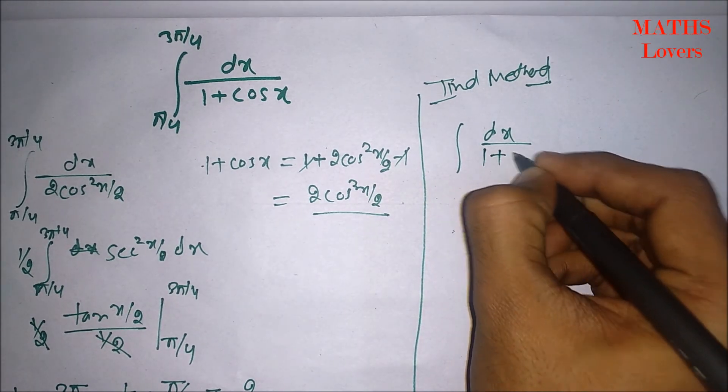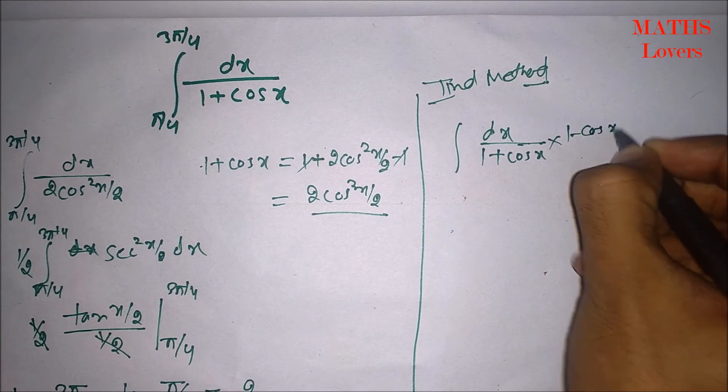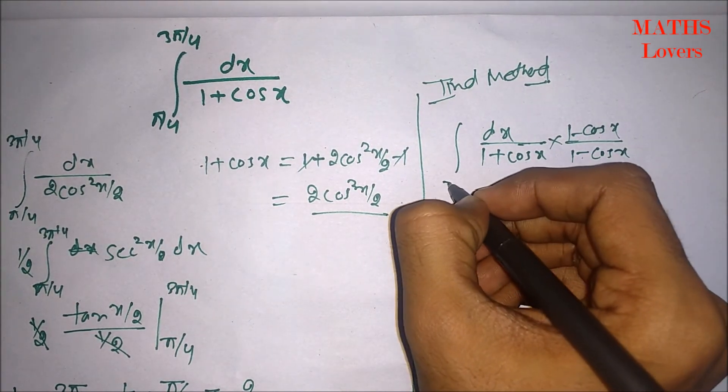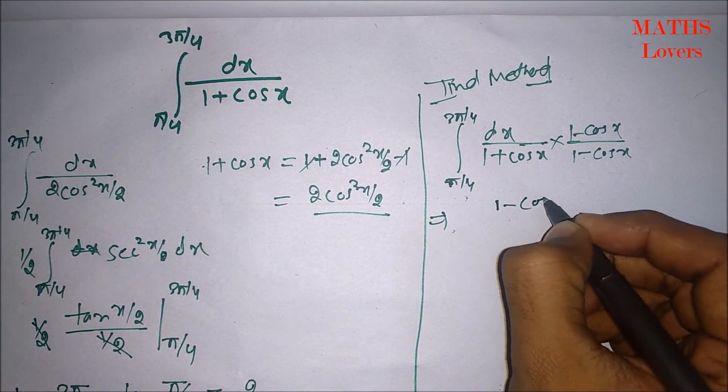So, 1 plus cos x. What we can do? We can multiply it 1 minus cos x and 1 minus cos x. Both denominator as well as numerator. So, this is 3 pi by 4. What we will get? 1 minus cos x.